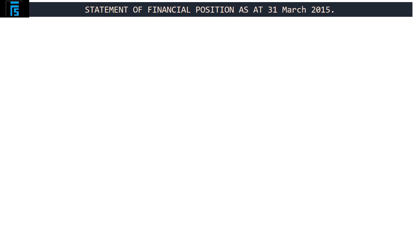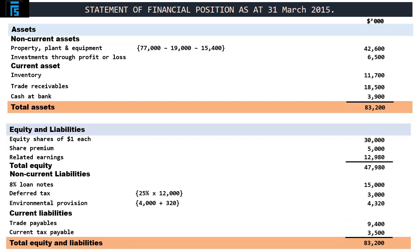We may now shift our attention to the statement of financial position, starting with the relevant heading: Clarion, Statement of Financial Position, as at 31st March 2015. Starting with non-current assets, we have property, plant and equipment, with an initial $77,000 cost, less $19,000 of accumulated depreciation, adjusted for the depreciation charge in respect of the year just ended of an extra $15,400, producing a carrying amount of $42,600. Next in line are investments through profit or loss, which as per note 4 should be reported at $6.5 million. This completes non-current assets, which come in at $49,100.